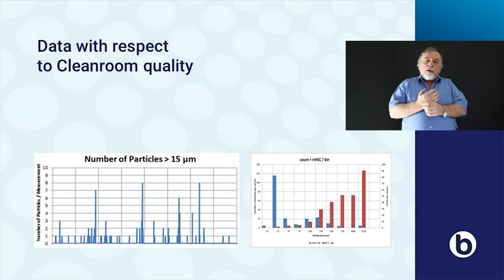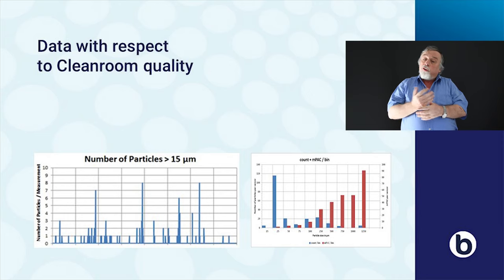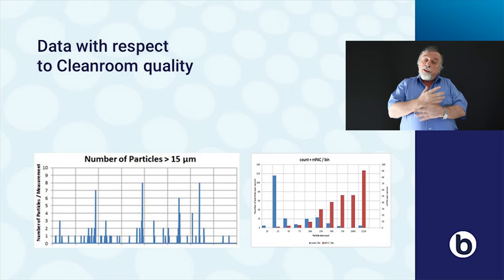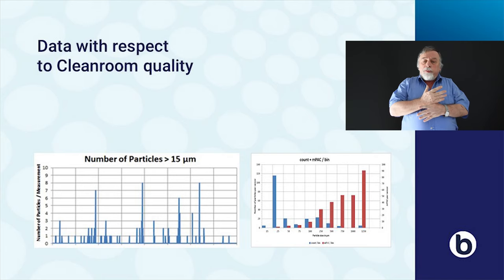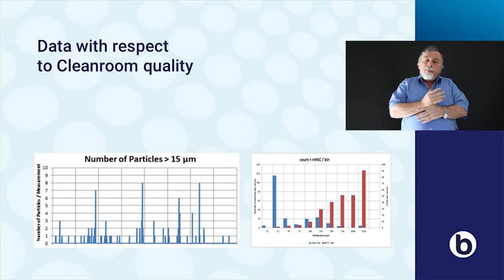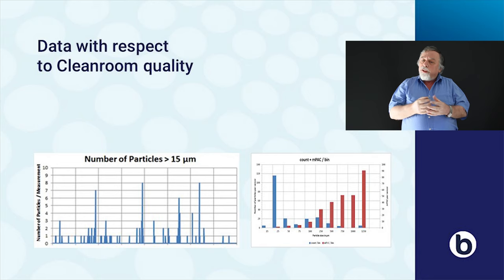There are two diagrams. One diagram shows the number of particles larger than 15 micrometers deposited on the sensor or witness plate over time; you can see that deposition is very irregular — sometimes high, sometimes low. On the right-hand side is a diagram showing the distribution of particles: the differential distribution of particle numbers shown in blue, and particle area coverage, since large particles cover a large area and show high area coverage on the right-hand bar.